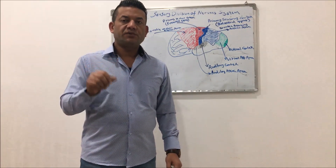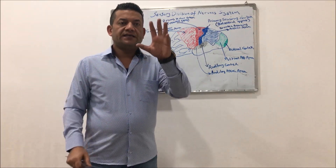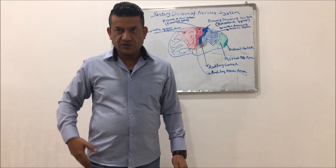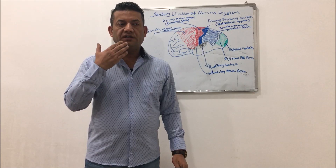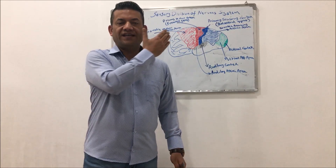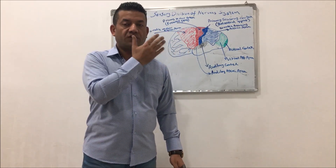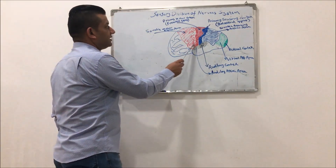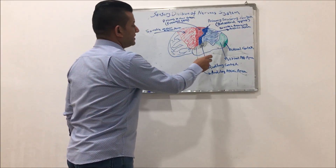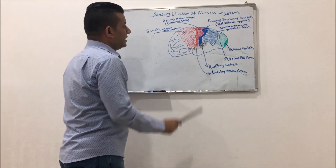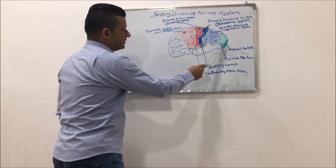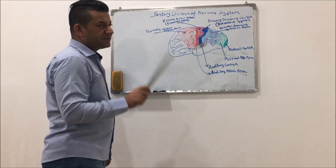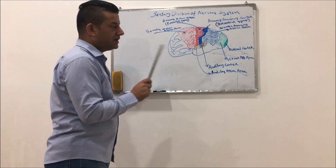Decussate means, for example, the sensory axons that come from the right side of the body will decussate to the left side before entering the thalamus. From there, they will travel to the specific areas in the cortex of the brain, where there are specific sensory areas.